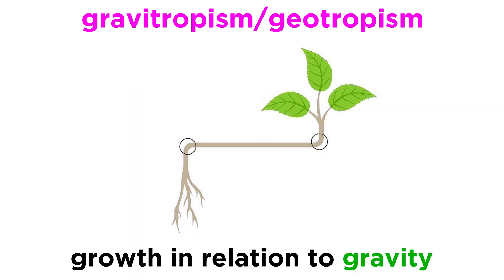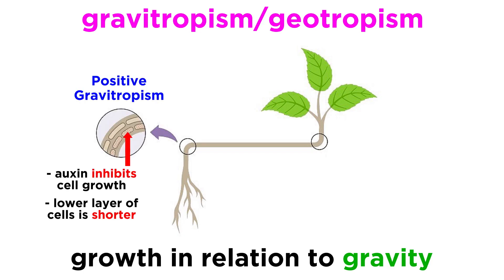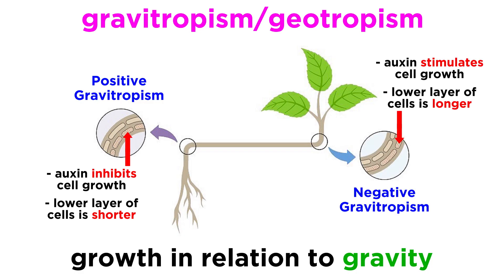When we first discussed auxin, we also mentioned gravitropism, also known as geotropism, which is plant growth related to gravity. This is important when plants are first emerging from their seeds. Positive gravitropism helps the roots grow downward towards the pull of gravity, while negative gravitropism helps the stem grow upward against the pull of gravity.